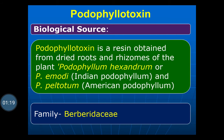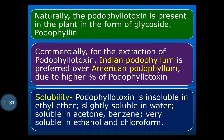This podophyllotoxin is a resin obtained from the roots and rhizomes of Podophyllum hexadrum, Podophyllum emodi, and Podophyllum peltatum. Of these, the Indian variety contains the largest amount of podophyllotoxin. Naturally, podophyllotoxin is present in the plant in the form of the glycoside podophyllin.